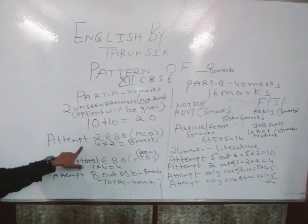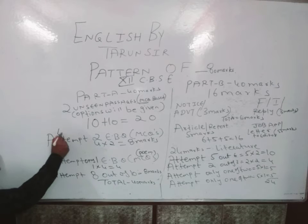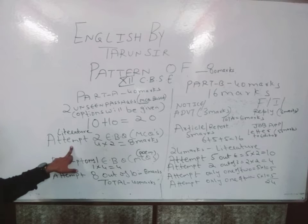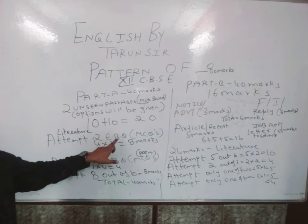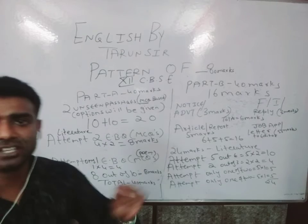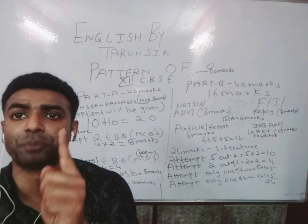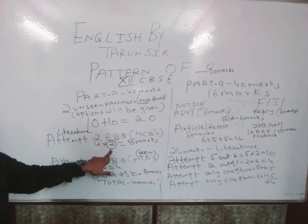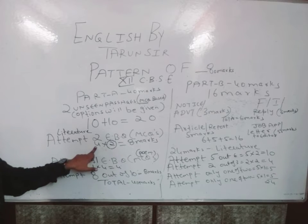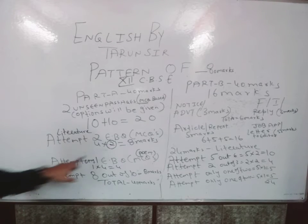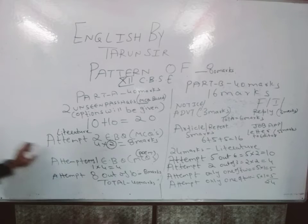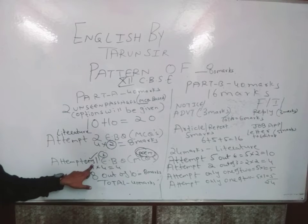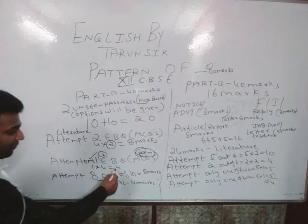Now let's come to the literature section. The first questions from the literature part will be extract-based. Three extract-based questions will be given from prose chapters — you will have to attempt only two, at four marks each, totalling eight marks. Then, one extract-based question from the poem — you will be given two choices and must attempt only one, for four marks.